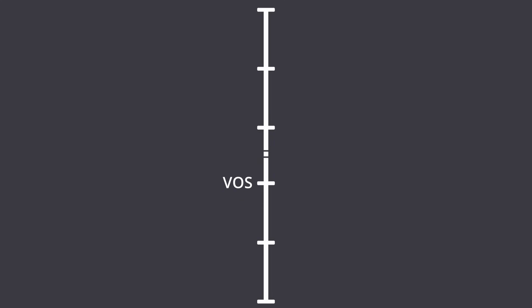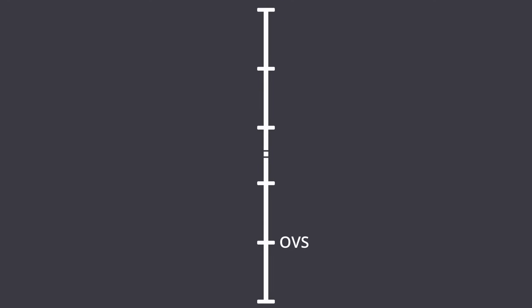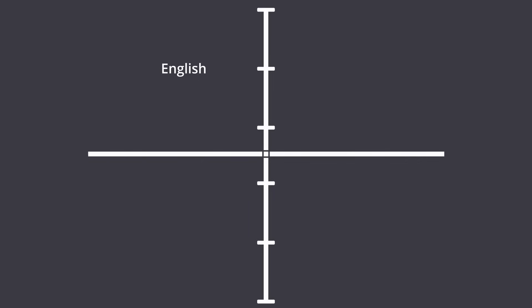Going further down, we've got Yucatec, spoken on the Yucatan Peninsula. Further down, we have OVS, which is incredibly rare — one of them is IWU. Going onto OSV, this is even rarer than OVS, with just around 0.3% of all languages in the world having it. One of these languages is Tobati.